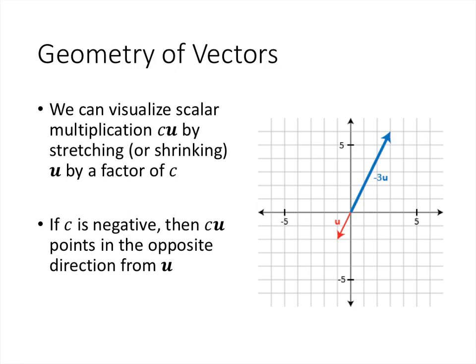And if I multiply by a negative number, that has the effect of the scaling that we already talked about, plus it's going to flip the vector around and make it point in the opposite direction. So in this picture, we've multiplied our vector by negative 3, which has two effects. It flips the vector around to point in the opposite direction, and it scales the vector by a factor of 3. So the new vector, negative 3u, points in the opposite direction, and it's three times longer than the original u.